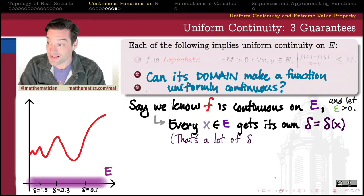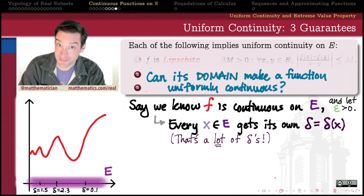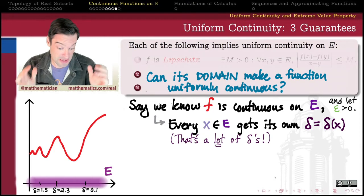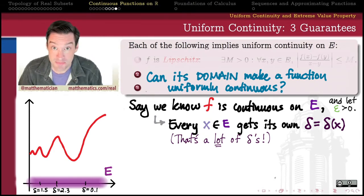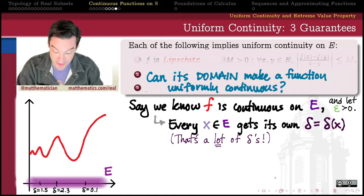The problem, of course, is that gives us a lot of deltas. There is a delta for each x in the domain. And so if I have like an open interval or something like that as my domain, I'm going to have uncountably infinitely many different deltas, potentially, that could work at different x values.